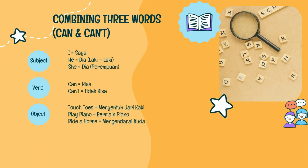He artinya adalah dia laki-laki, dan she artinya adalah dia perempuan. Yang kedua ada verb. Karena di sini kita sedang belajar can dan juga can't, jadi verbnya hanya ada can dan juga can't. Can artinya adalah bisa, can't artinya adalah tidak bisa. Yang terakhir adalah objek: touch toes artinya menyentuh jari kaki, play piano artinya bermain piano, ride a horse artinya mengendarai kuda.